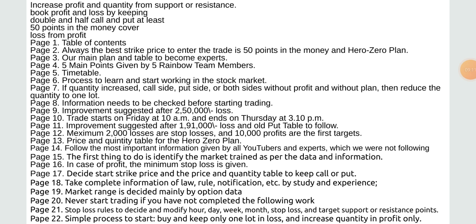4. Five main points given by five rainbow team members. 5. Timetable. 6. Process to learn and start working in the stock market. 7. If quantity is increased on the call side, put side, or both sides without profit and without plan, then reduce the quantity to one lot.